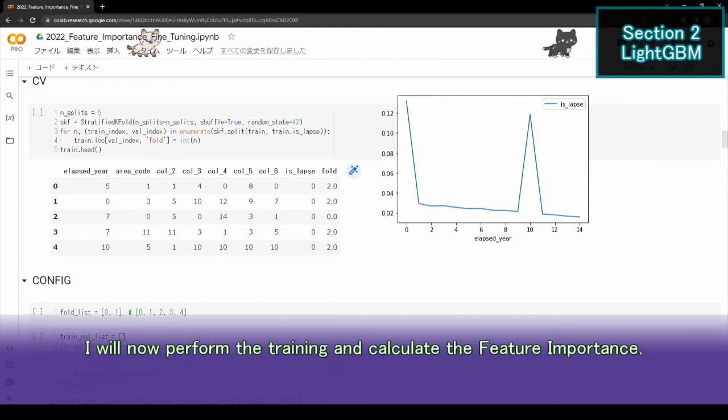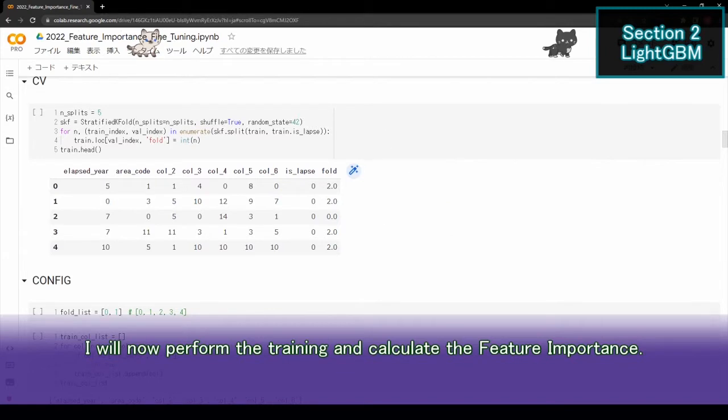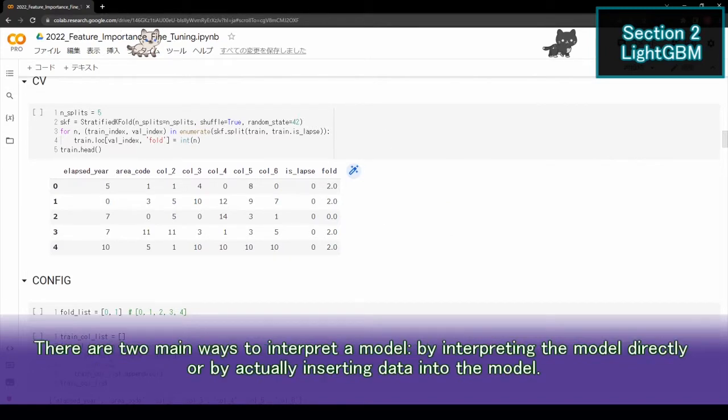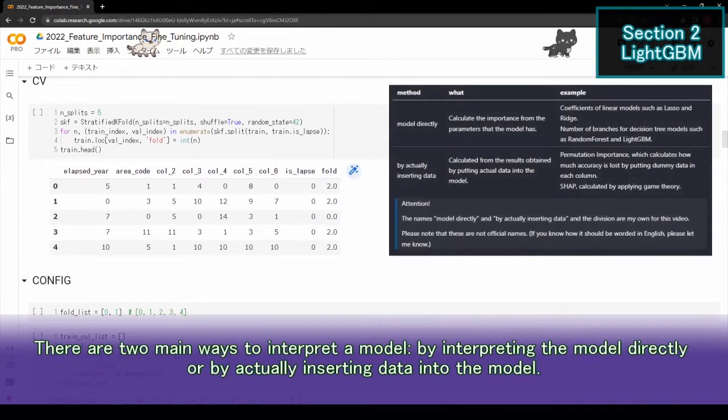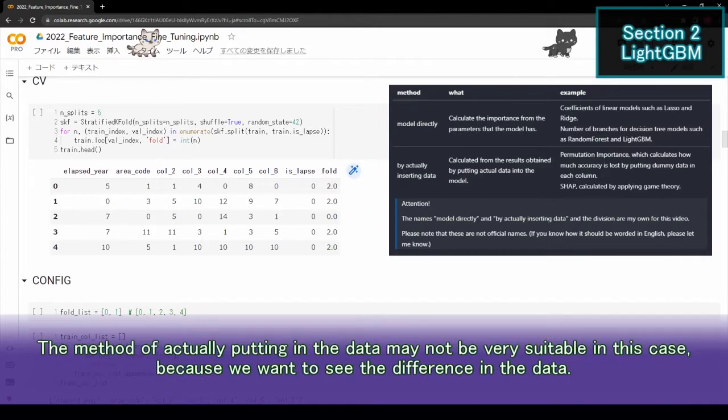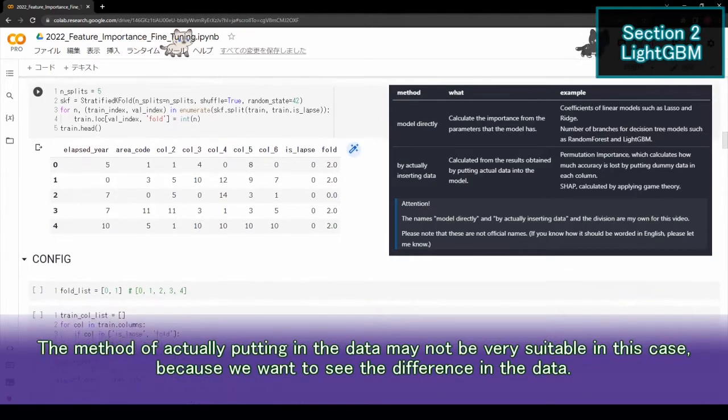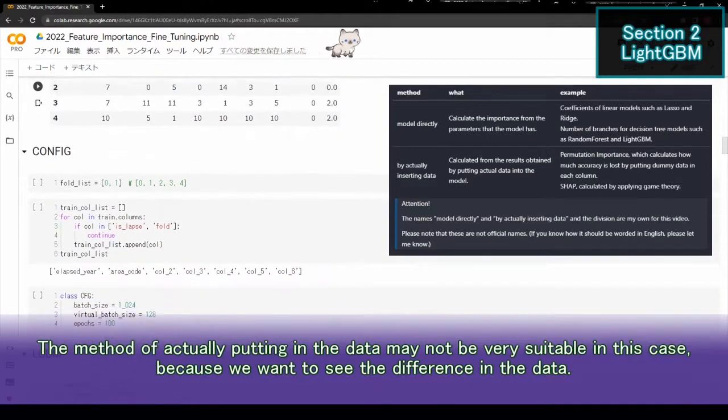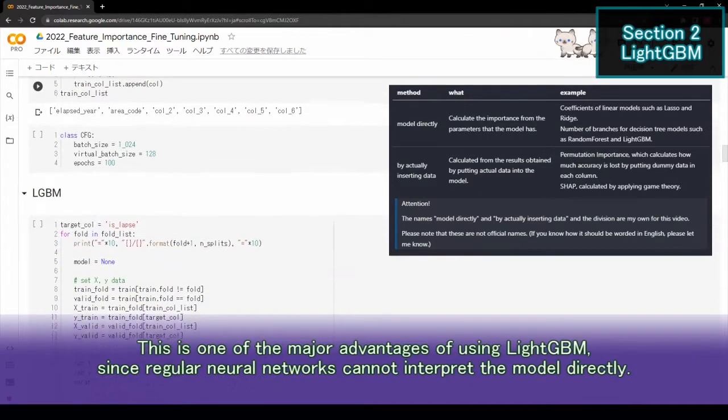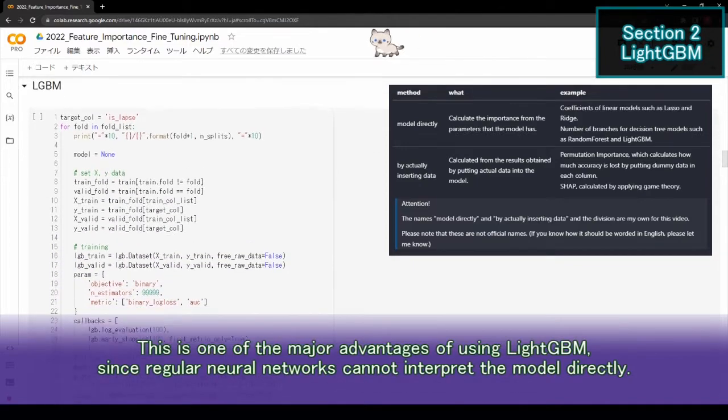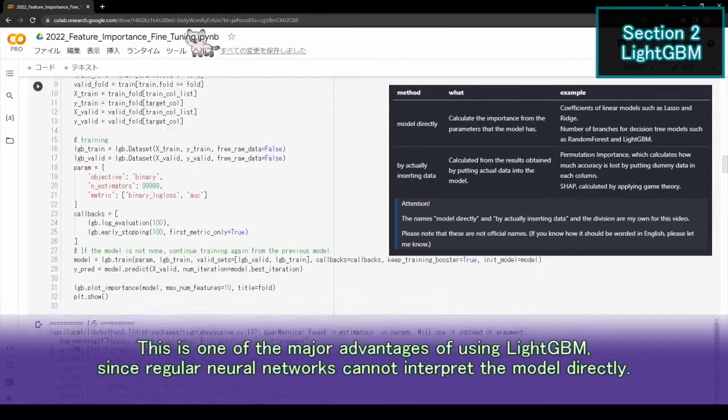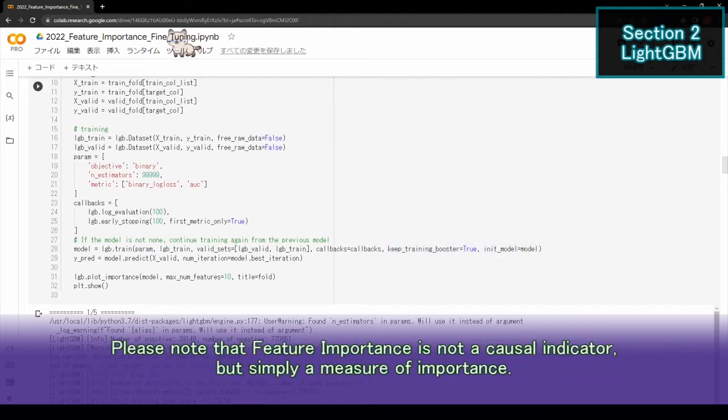I will now perform the training and calculate the feature importance. There are two main ways to interpret the model: by interpreting the model directly or by actually inserting data into the model. This is one of the major advantages of using LightGBM, since regular neural networks cannot interpret the model directly. Please note that feature importance is not a causal indicator, but simply a measure of importance.